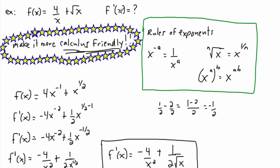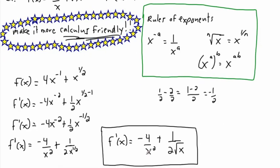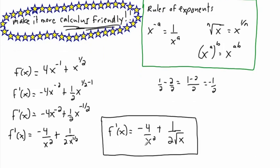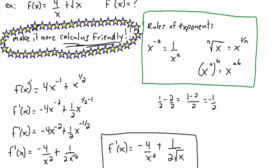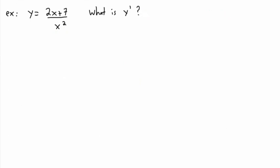So if we ask specifically, what is the slope at x equals 12? Then you take this equation and everywhere you see an x, you replace it with 12. So it would be negative 4 over 12 squared — which is 144 — plus 1 over 2 times the square root of 12. That wouldn't work out all that nicely, but in any case we could totally do it.